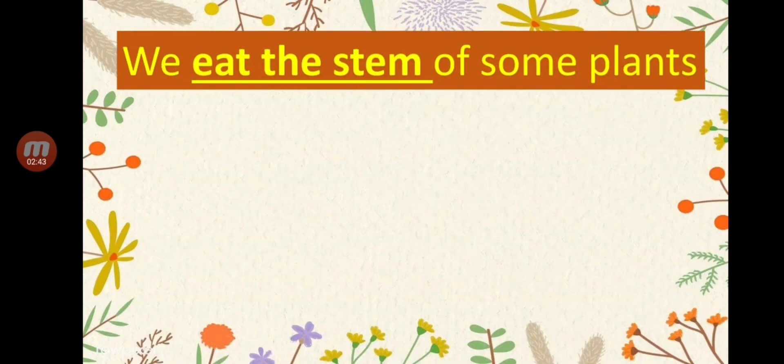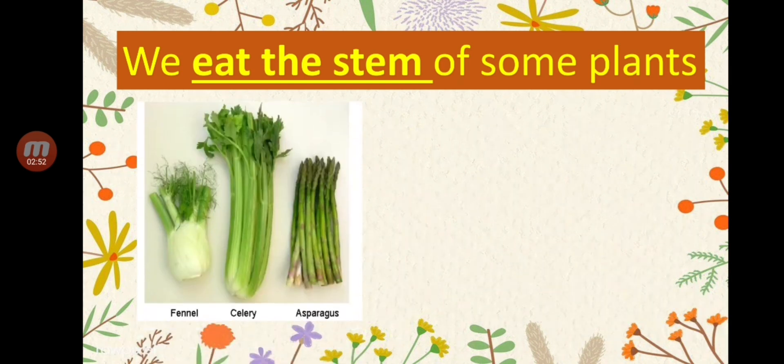We also eat the stem of some plants. Let's talk about plants that we can eat their stems. The first examples are fennel, celery, and asparagus — those are plants that we can eat their stems.